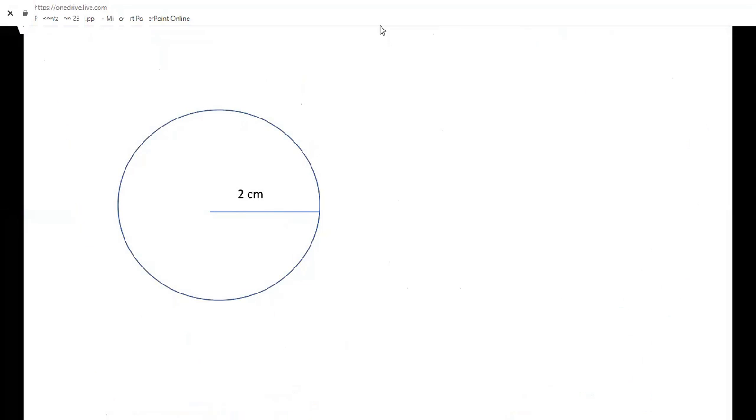This is a circle of two centimeter radius, and we are going to know how to do the perimeter of this circle. So let's start.